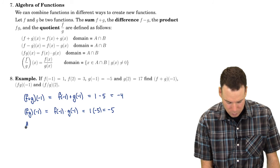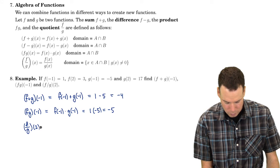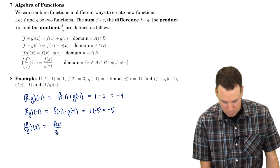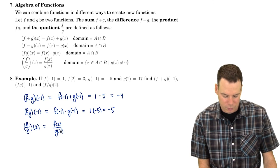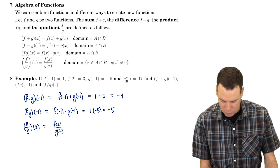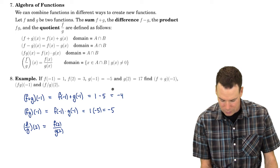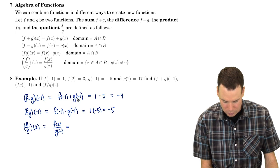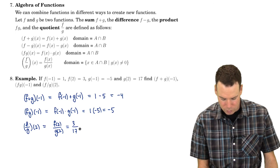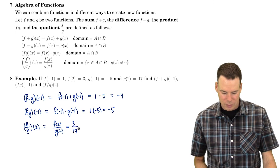What about f divided by g at 2? That would be f of 2 divided by g of 2. We need to check that g of 2 is not zero — and indeed g of 2 is 17, so we're fine. f of 2 is 3 and g of 2 is 17, so the result is 3 seventeenths.